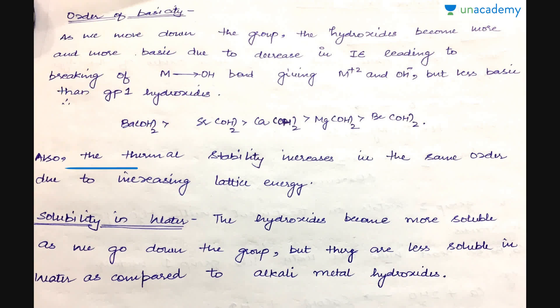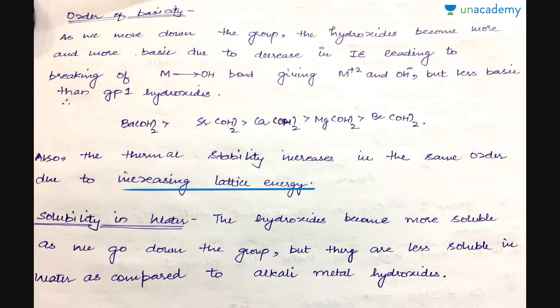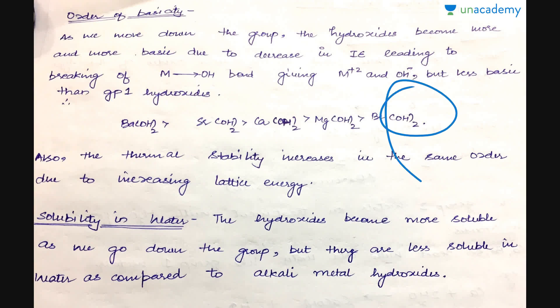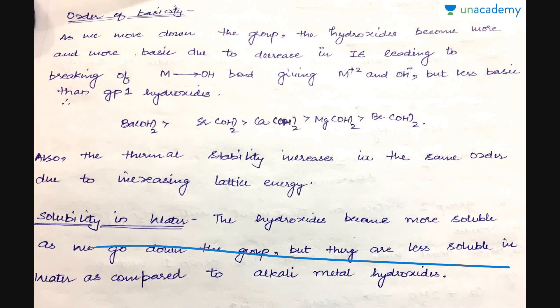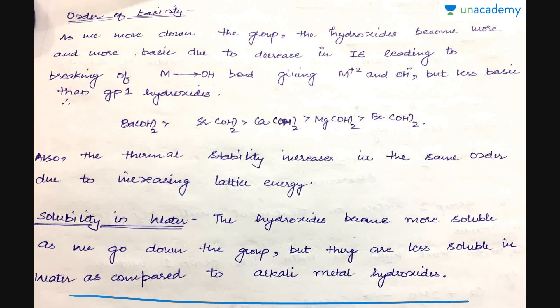Their thermal stability also increases in the same order due to increase in lattice energy. Therefore, barium hydroxide is the most basic as well as the most thermally stable compound, whereas beryllium hydroxide is the least basic and least stable. Regarding solubility in water, the hydroxides become more soluble as we go down the group, but are less soluble compared to alkali metal hydroxides.